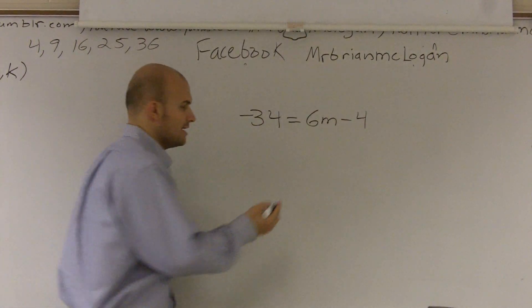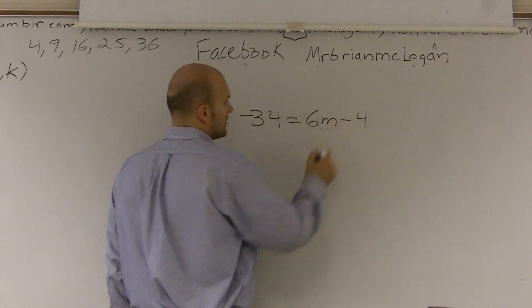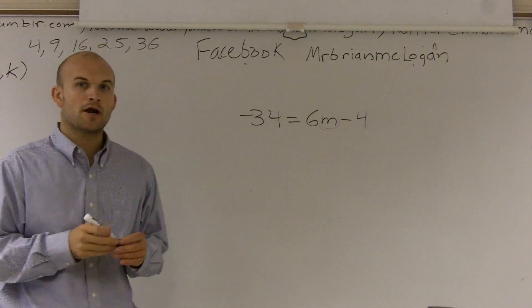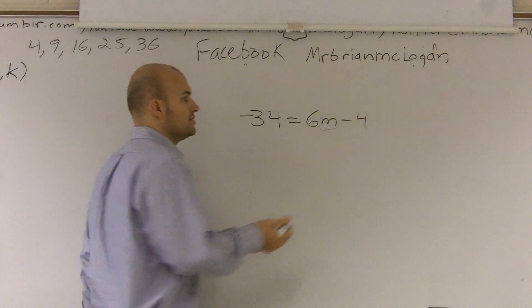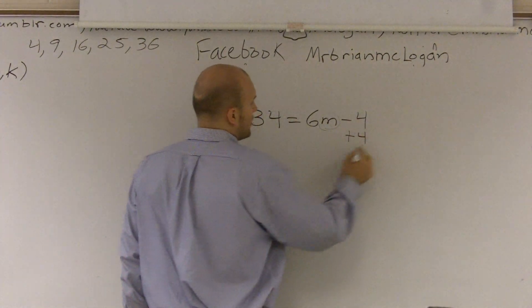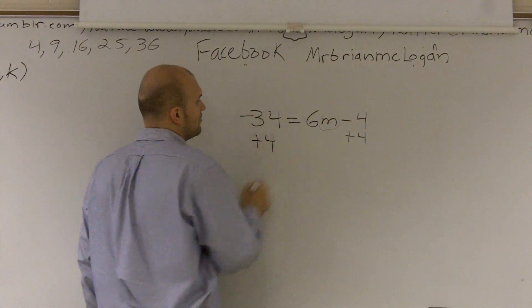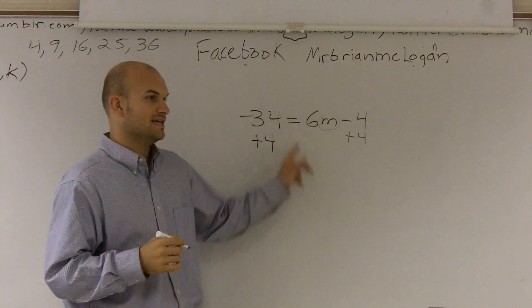So I look at my variable, and I'm going to circle it. I'm going to say, all right, what is happening to the variable in regards to it adding and subtracting? And you can say it's being subtracted by 4. So to undo that, I need to add a 4. And you're going to add a 4 to both sides of the equation, both sides of the equal sign.